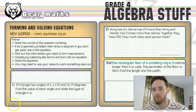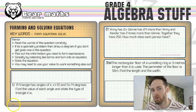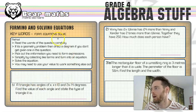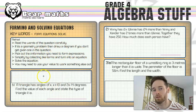And by the magic of television I appeared over there. What a wonderful thing. So in B we've got a triangle that has angles of x, x plus 10, and 2x minus 14 degrees. We've got to find the value of each angle and state the type of triangle that it is.